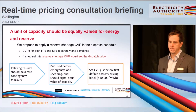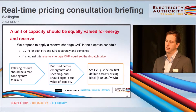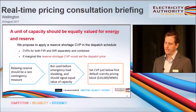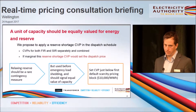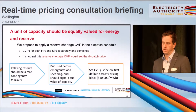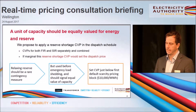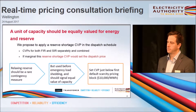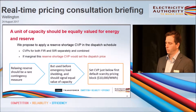In order to achieve that objective under real-time pricing, we propose to use a reserve shortage CVP — a constraint violation penalty — and we'll flag that this instance of CVP is the only time when it will actually count to set the price. CVPs are of course used throughout the pricing processes today in order to resolve infeasibilities, but generally speaking they don't set the price.